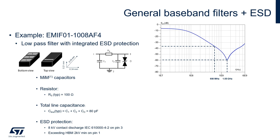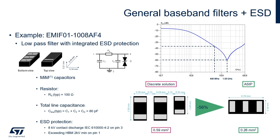The ASIP technology also allows ST to design tiny integrated baseband filters that can be housed in packages as small as a three-lead 0201. In the case of this CRC low-pass filter plus ESD, the benefit in terms of size reduction is pretty significant compared to the equivalent discrete solution.